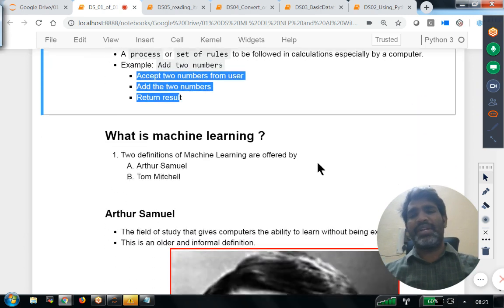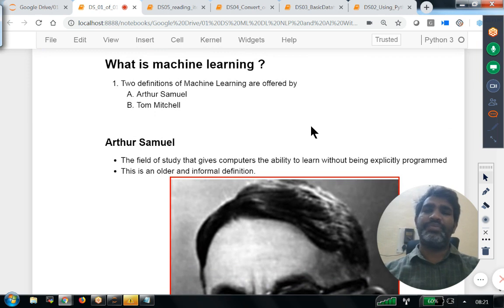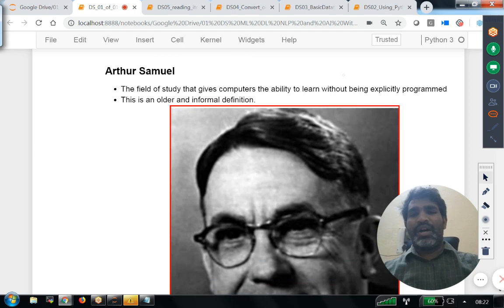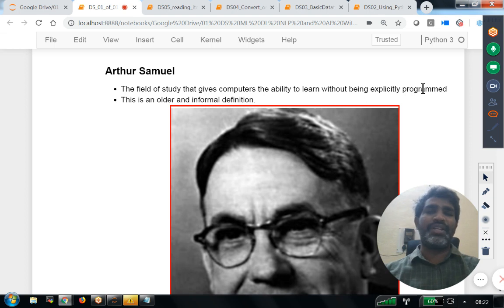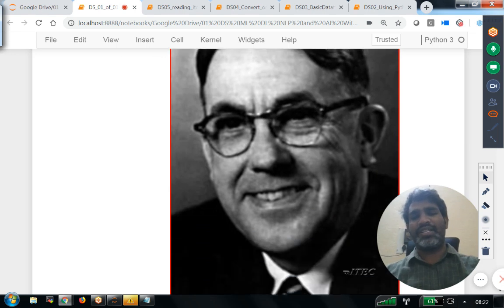Now what is machine learning? Two definitions are available in the market given by two authors. One is Arthur Samuel, second is Tom Mitchell. If you talk about Arthur, the field of study that gives computers the ability to learn without being explicitly programmed. Let's say I have to do 100 tasks. You need not write everything. If you write up to a certain extent, rest of the things it has to learn on its own by seeing the data.